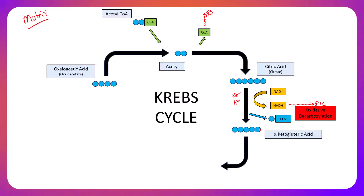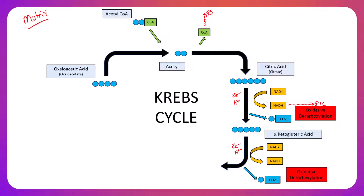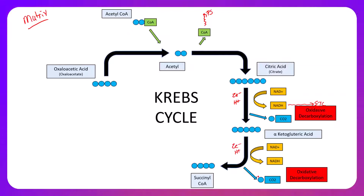Once alpha-ketoglutaric acid is produced, we oxidatively decarboxylate it again. NAD+ comes in, grabs a pair of electrons and a hydrogen ion, and is converted into NADH. Then we cut another carbon off the alpha-ketoglutaric acid — another round of oxidative decarboxylation. Once complete, we have a four-carbon compound called succinyl-CoA. Started with six, cut a carbon off to five, cut another carbon off to four. Since we started with a four-carbon compound and are now at four, there is no more oxidative decarboxylation.